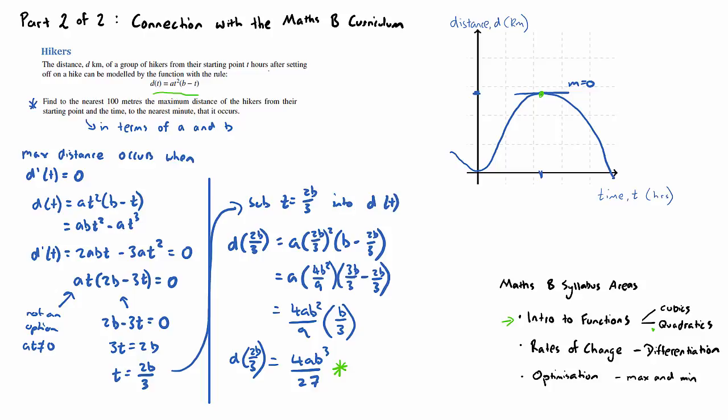And the key concept for a student to grasp there to solve this question is when we have the quadratic, which is the derivative here that I'm just drawing a green dot next to, how to factorize it and find the solutions for t. In the method that I did, because there are other methods, the student could have used the quadratic formula, could have used a couple of different ways, but I chose to factorize it, which can be shown at this line here, and then use the null factor law to find the solution for t.